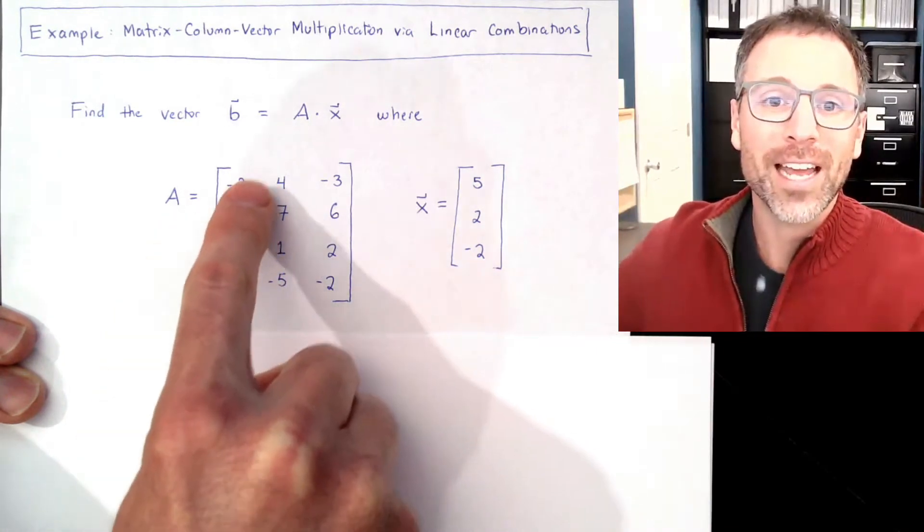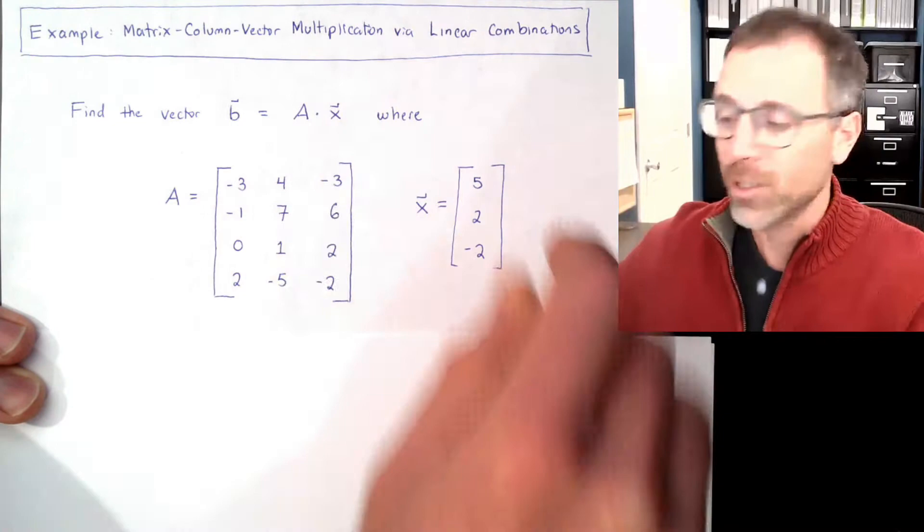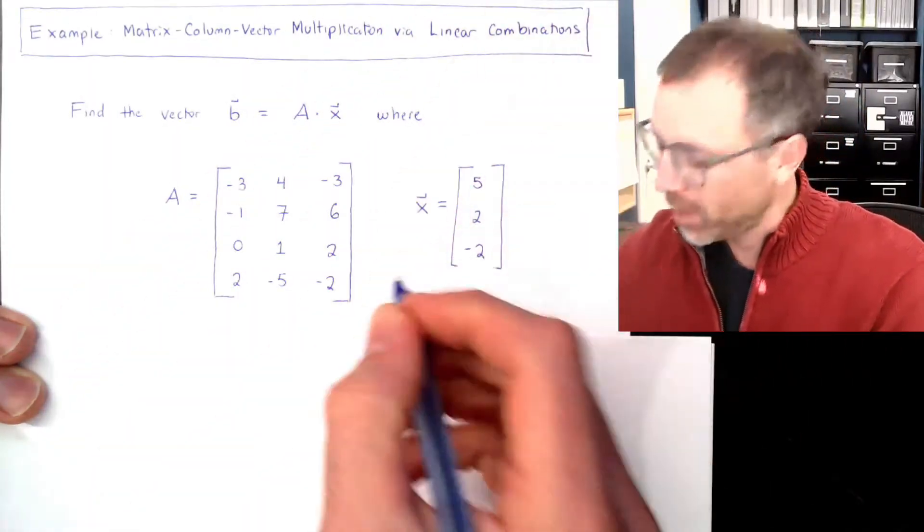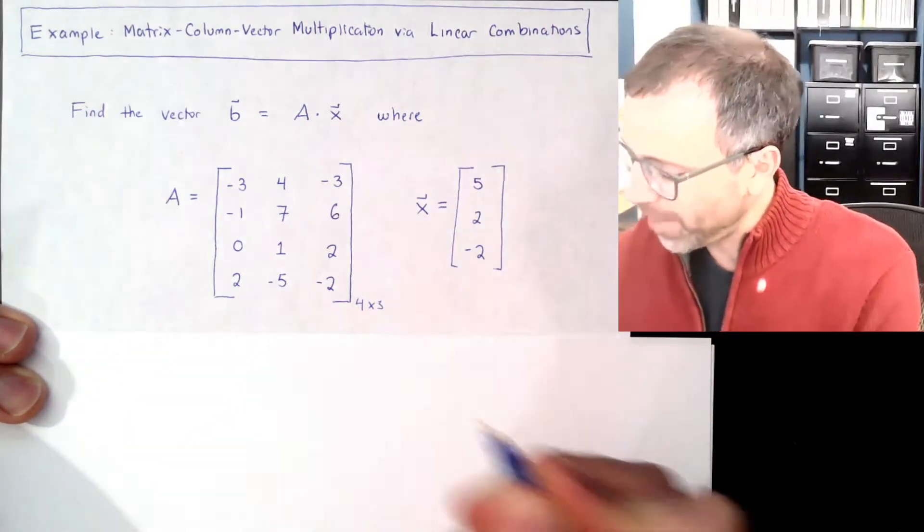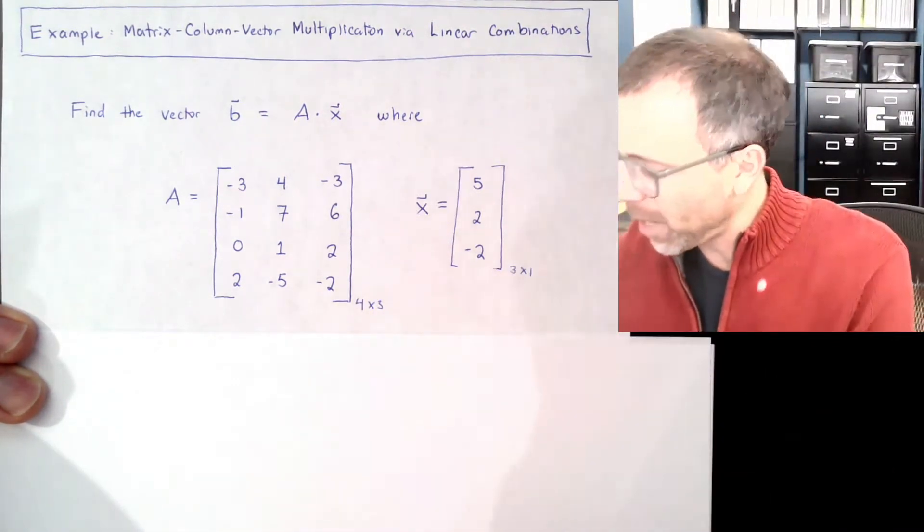Where A is negative 3, 4, negative 3; negative 1, 7, 6; 0, 1, 2; and 2, negative 5, negative 2. So that's a 4 by 3 matrix. Let's go ahead and write that. This is a 4 by 3 matrix. And then x is what we call a 3 by 1 vector.